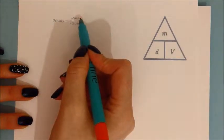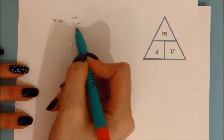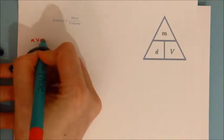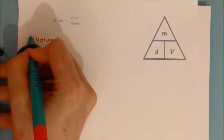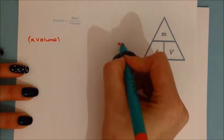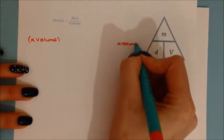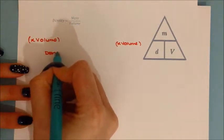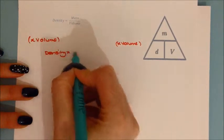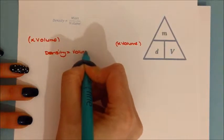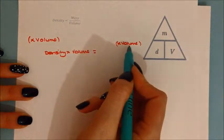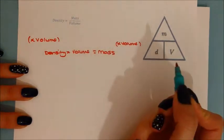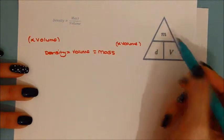If you want to get mass on its own, you need to multiply both sides by volume to get rid of the division. So multiplying by volume on both sides: density multiplied by volume equals mass, because the opposite of dividing is multiplying, so that cancels out and leaves mass. So density times volume equals mass.